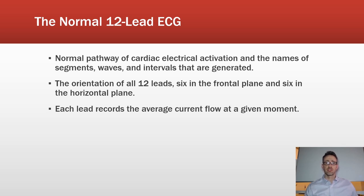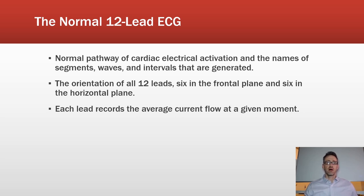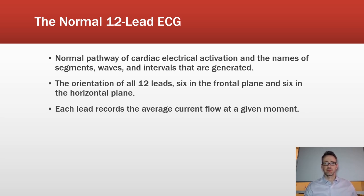To understand an ECG, we need to know the normal pathway of cardiac electrical conduction: from the SA node to the AV node, then the bundle of His, bundle branches, and Purkinje fibers. We also need to understand the names of the ECG segments, what the waves are called, what the intervals are, and what they represent.